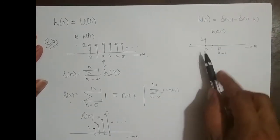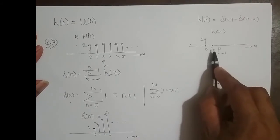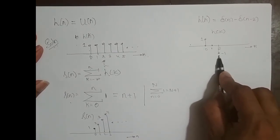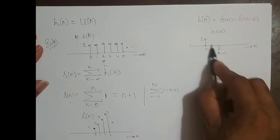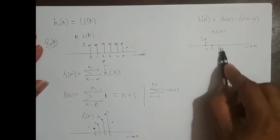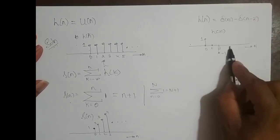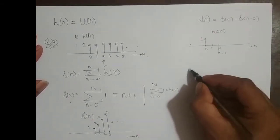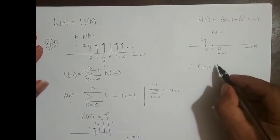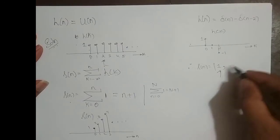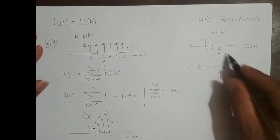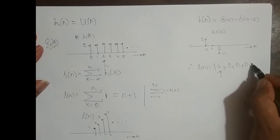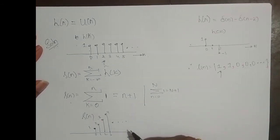I can compute directly without the full formula. If n is at 0, the step response is 1. If n is at 1, the step response is also 1, because 1 plus 0 equals 1. If n is at 2, the step response is 0, because 1 plus 0 minus 1 equals 0. For n equal to 3, 4, 5 and onwards to infinity, it remains 1 minus 1 equals 0. So S of n: at n equal to 0 it is 1, at n equal to 1 it is 1, and from n equal to 2 onwards it is 0.